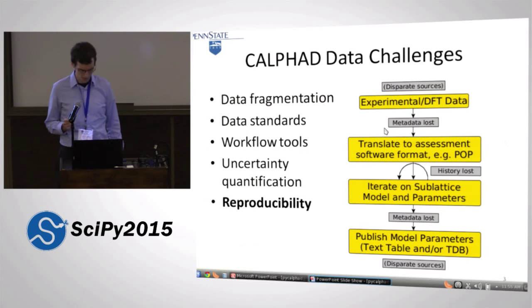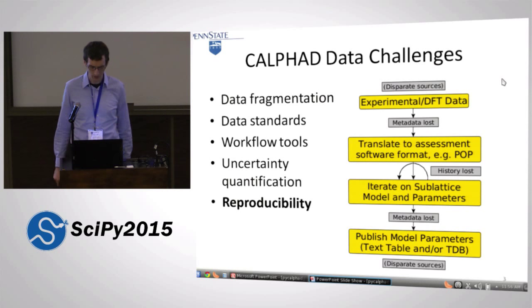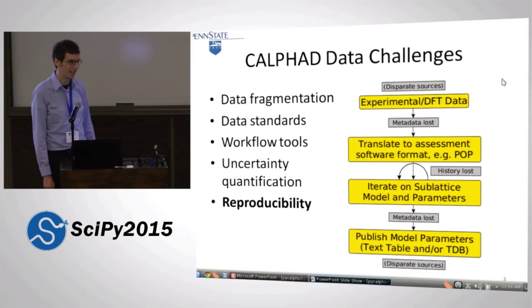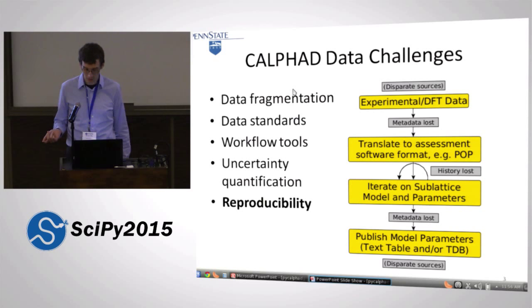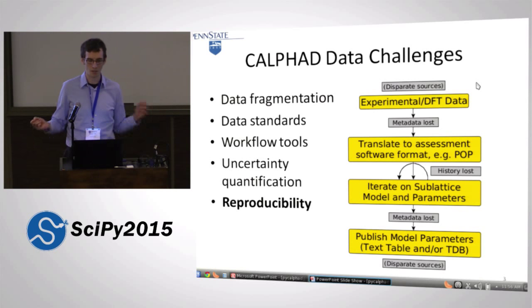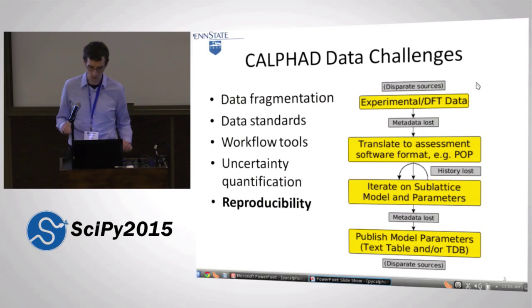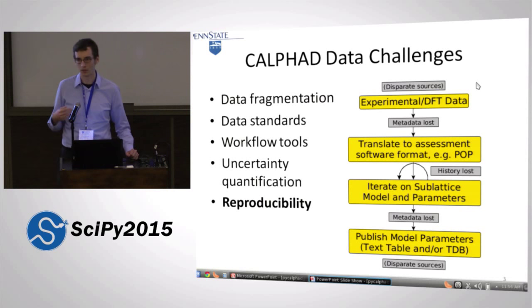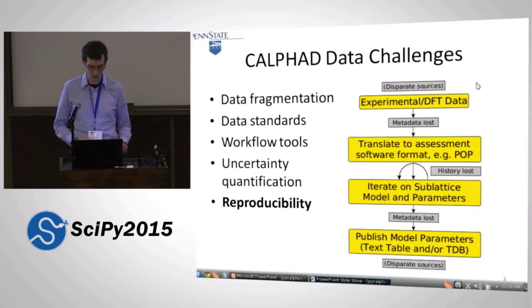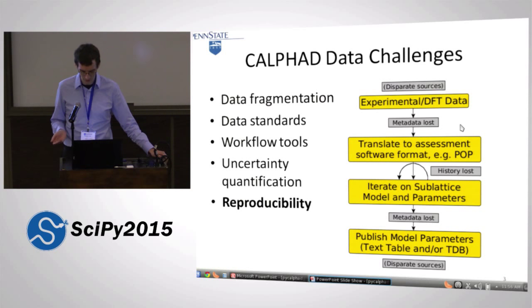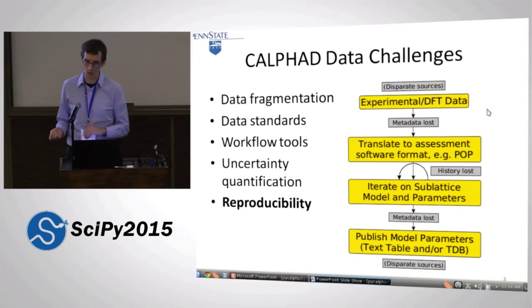The CALPHAD community right now is facing a lot of challenges, and I would say probably the most significant ones have to do with data. The number one challenge is data fragmentation. Our models are fit to experimental data or from first principles data computed from quantum mechanics. They exist in disparate sources, disparate formats, all over the literature. So any time you want to develop one of these models, you have to do exhaustive searches. There's no clearinghouse for this data and no standards for the data.